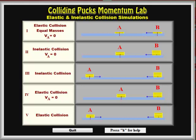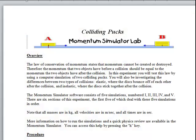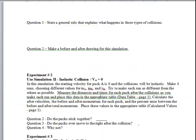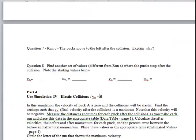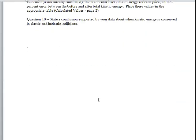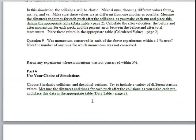The fifth is an elastic collision where both pucks are moving. The provided lab sheets include an overview, procedure, and six experiments using each of the five simulations. One simulation is used twice where we look specifically at how the kinetic energy changes in the collision.